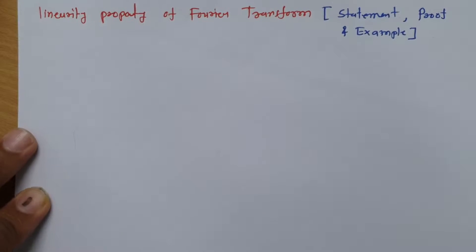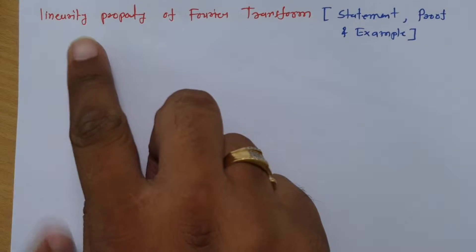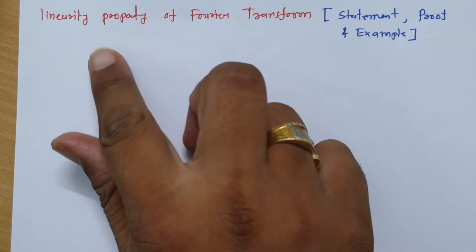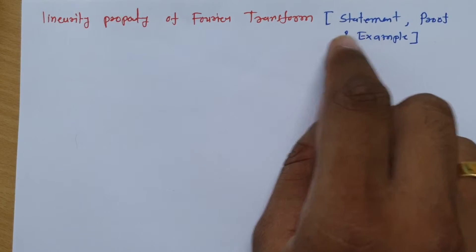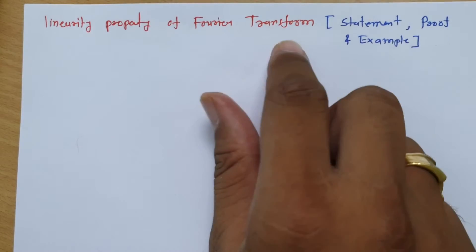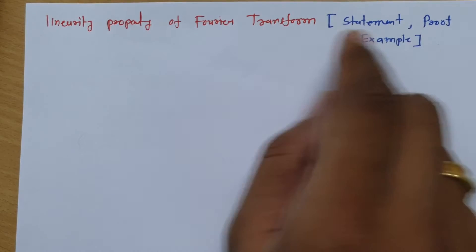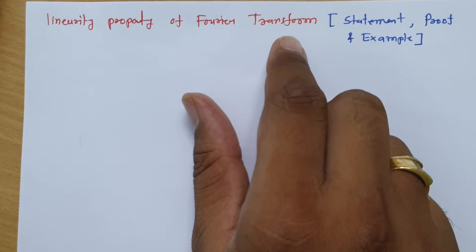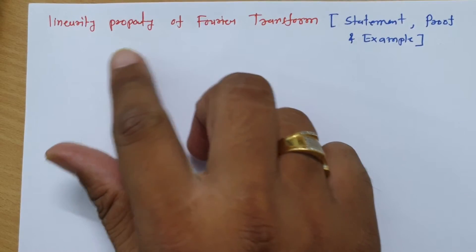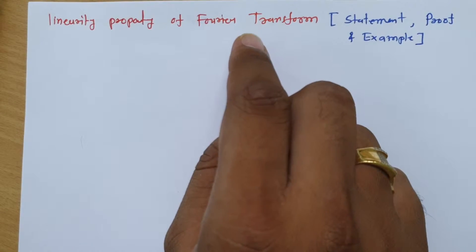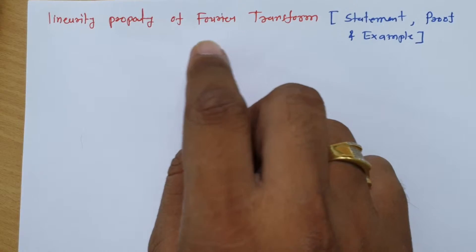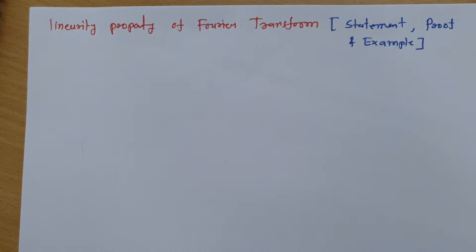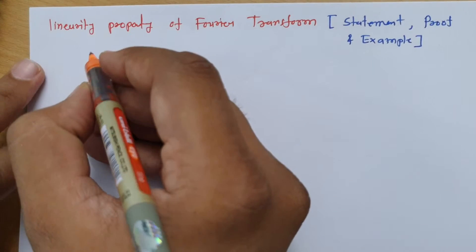Welcome to the signal and system lecture series. In this session, I will explain the linearity property of Fourier transform. I will give you the statement of the linearity property, then the proof, and then we will see a very interesting example based on it, which gives you a simpler way of calculating Fourier transforms using this property.